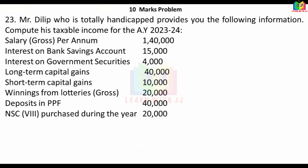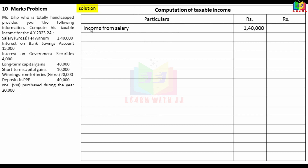Next problem: Mr. Dilip, who is totally handicapped, provides the following information. Compute his taxable income for the assessment year 23-24. Salary per annum Rs.1,40,000, interest on bank saving account Rs.15,000, interest on government security Rs.4,000, long-term capital gain Rs.40,000, short-term capital gain Rs.10,000, winning from lottery Rs.20,000, deposit in PPF Rs.40,000, NSE purchase during the year Rs.20,000.